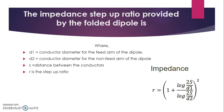The impedance step-up ratio provided by the folded dipole can be seen in the equation: R equals 1 plus log(2s/D1) divided by log(2s/D2), whole squared. Where D1 is the conductor diameter for the feed arm of the dipole, D2 is the conductor diameter for the non-feed arm of the dipole, S is the distance between the conductors, and R is the step-up ratio. You can calculate your impedance using this formula.